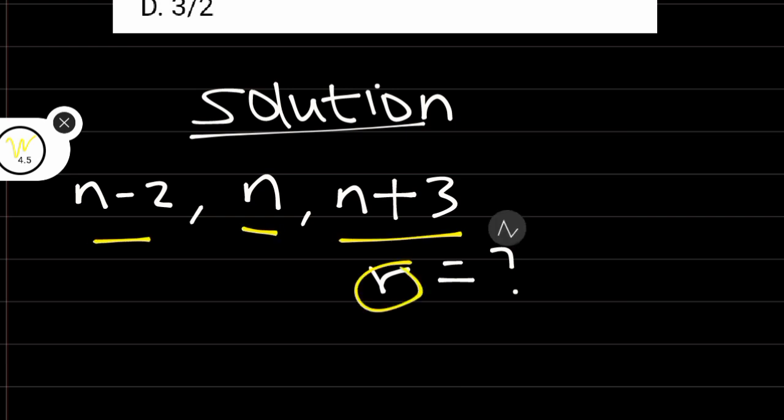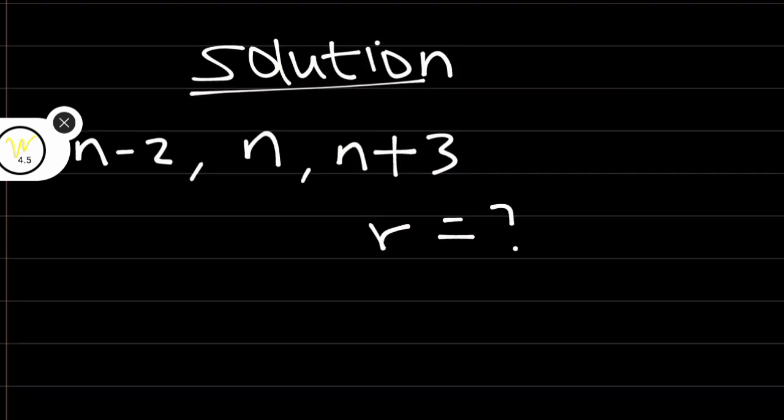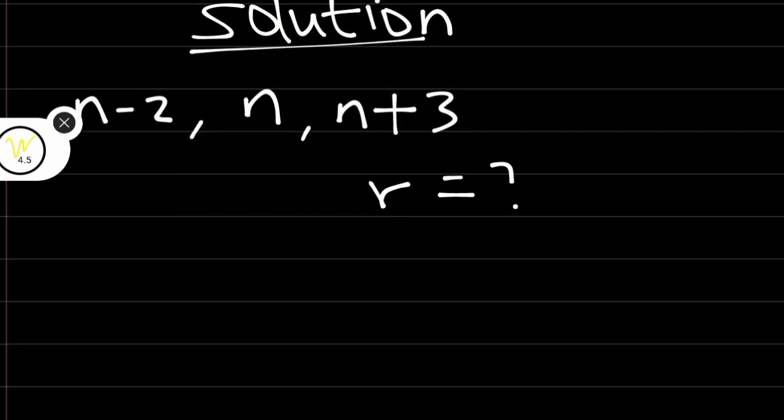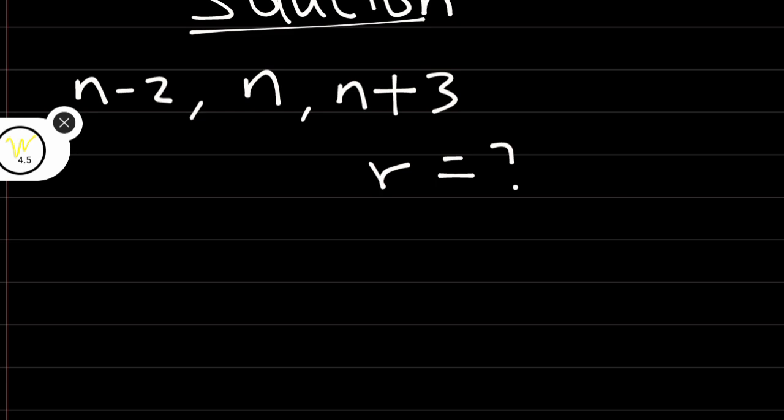We want to find the common ratio. If these terms are consecutive terms, common ratio is given by a term divided by the term before it. Take note of that.